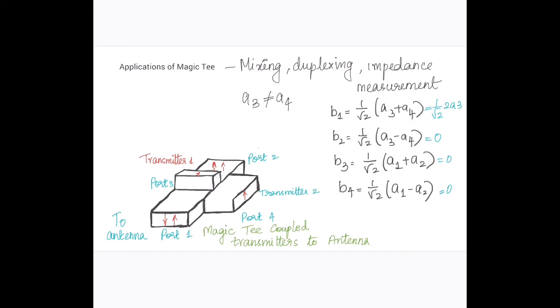So consider we have two transmitters - port 3 can be connected to transmitter 1 and port 4 can be connected to transmitter 2.